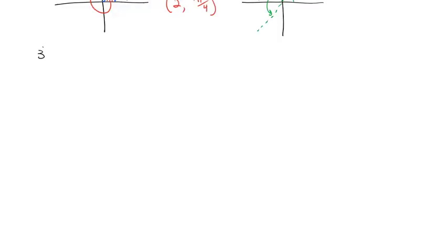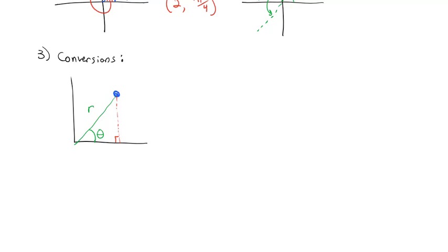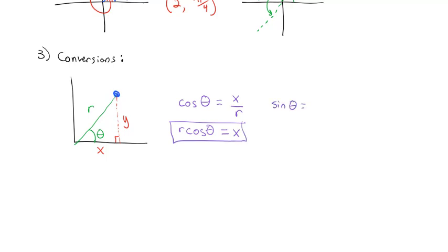Let's take a look at how we can do conversions between polar and rectangular coordinates. To set these conversions up, let's take a look at a point drawn by some radius r and some angle theta. If we drop a triangle on that, we end up with an x distance to the right and a y distance up. We know that the cosine of theta is the adjacent x over r, and multiplying by r tells us that the x-coordinate is equal to r cosine theta. Similarly, if we take the sine of the angle, it would be the opposite over r, or y over r. Multiplying both sides by r, we get r sine theta is equal to the y-coordinate.